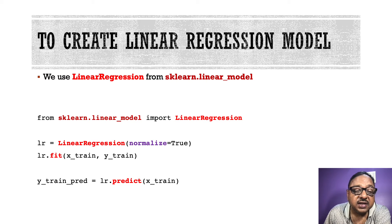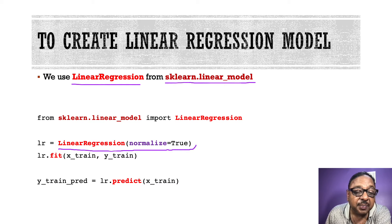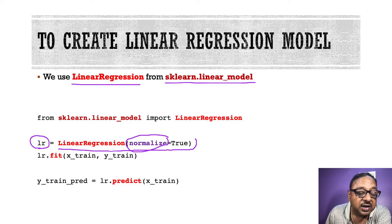Once the training and test sets have been created, we can proceed to create our regression model. The first regression model we will create is linear regression. We use the function LinearRegression from the library sklearn.linear_model. We create an instance of LinearRegression with the parameter normalize equal to true, so the data will be normalized before the model is created. Then I call lr.fit with the x_train and y_train data to build the model.